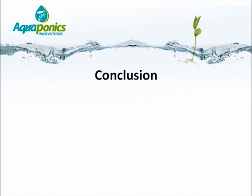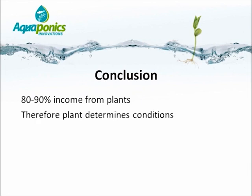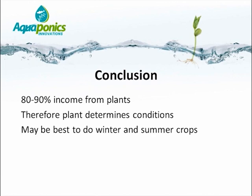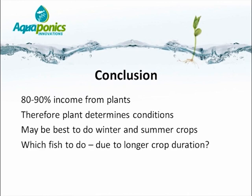In conclusion, 80–90% of income will typically come from plant crops. Therefore, the plant crop should determine the conditions under which the aquaponics system is managed. It may be best to grow different crops in summer and winter, and the selection of fish will therefore be a function of your selection of plants.